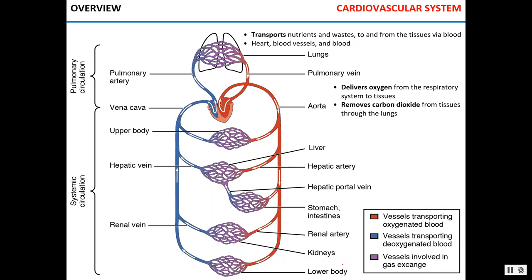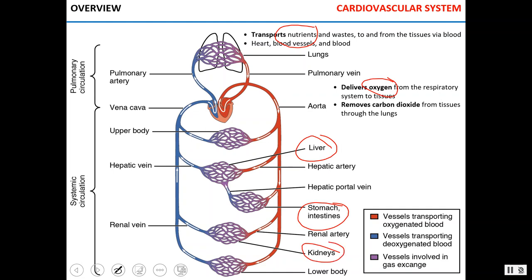Today we will be talking about the cardiovascular system, whose function is the transport of nutrients and oxygen to the tissues like liver, stomach, or kidneys, and transporting wastes and carbon dioxide away from the tissues. The three main components of the cardiovascular system are the heart, blood vessels, and blood within those blood vessels.